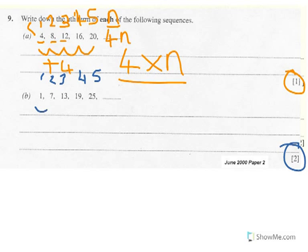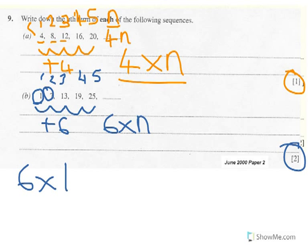So how are those changing each time? How are they going up? Well, they're all going up by adding 6, which means we must be multiplying by 6. So we're going to be doing 6 times something, 6 times n. Now, doing 1 times 6 does not get me 1. 2 times 6 definitely doesn't get me 7. So we know that we're going to be doing 6 times 1, but then we're going to have to do something else to get an answer of 1.